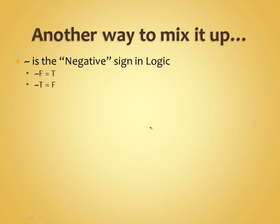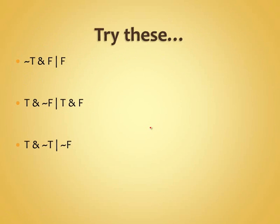There's another way to mix it up — you can use negation. This is the tilde (~), which is shift plus the key above tab. Not false is true, and not true is false. If you remember the order of precedence, we do the negation first, before we do the ANDs and ORs. So if we had 'NOT false AND true,' that would actually be 'true AND true,' which equals true. Of course, if we have parentheses around it, all bets are off.